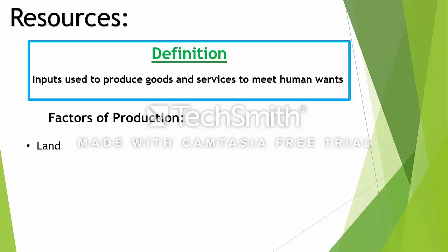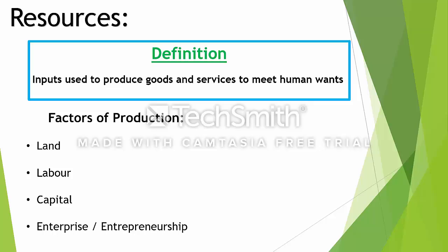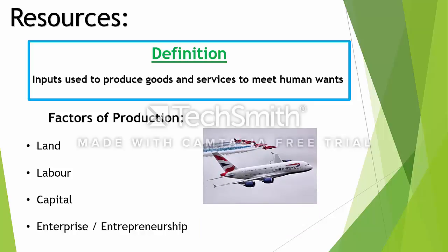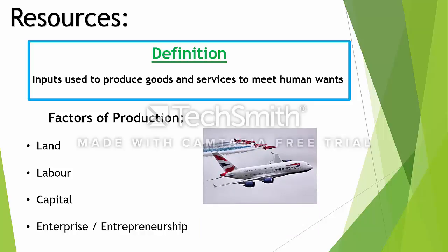The first factor of production is called land. The second is labour, which is humans. Then we have capital, which does not mean money — we'll come back to that in a second. And then we have enterprise or entrepreneurship. There's an aeroplane shown here, which is an example of capital in economics because it's a machine that transports people. You have labour working on that machine, but the aeroplane itself is an example of capital.